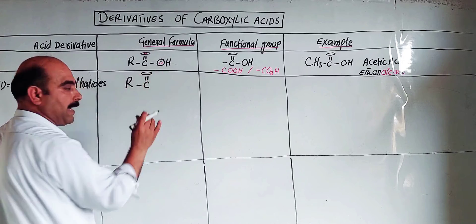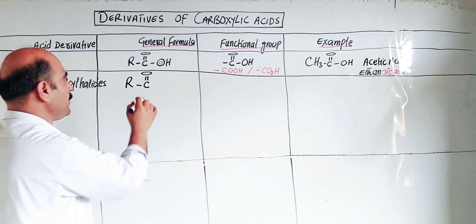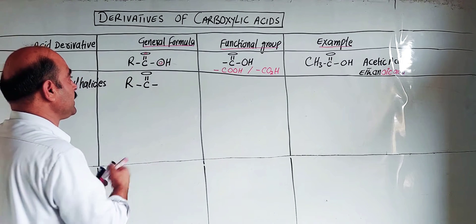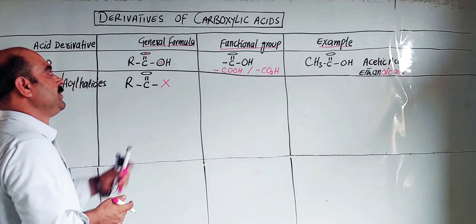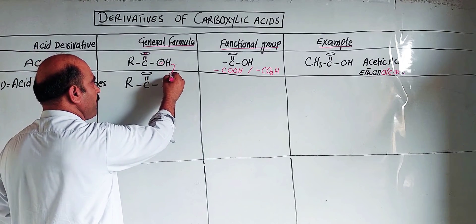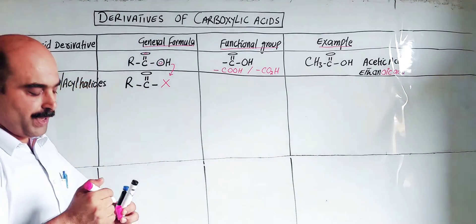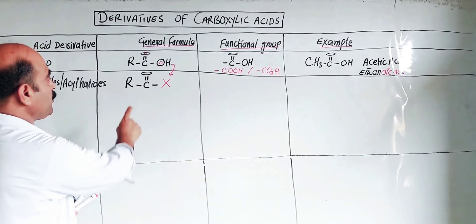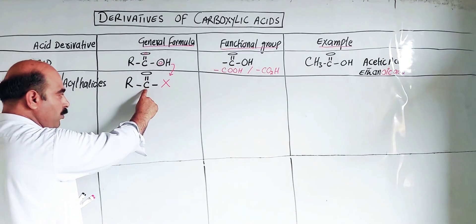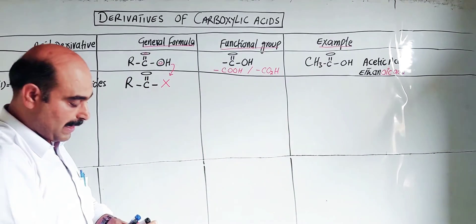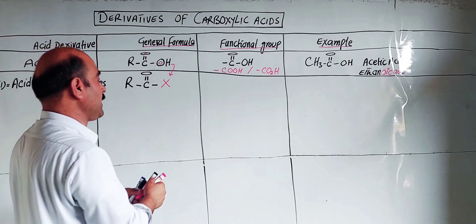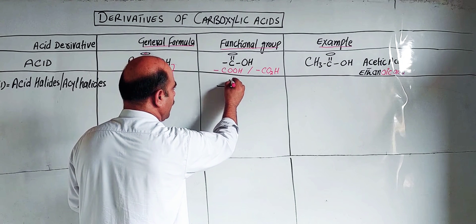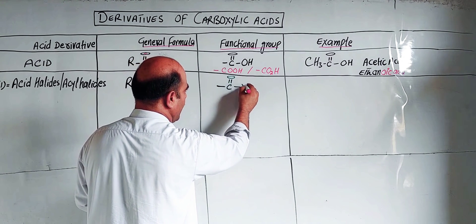The first derivative is acid halides, also called acyl halides. These are obtained by the displacement of the OH group by a halogen: fluorine, chlorine, bromine, or iodine. The acyl group is R-C=O, so the resulting compound R-C(=O)-X is called an acyl halide. The functional group contains the carbonyl group with X (halogen).